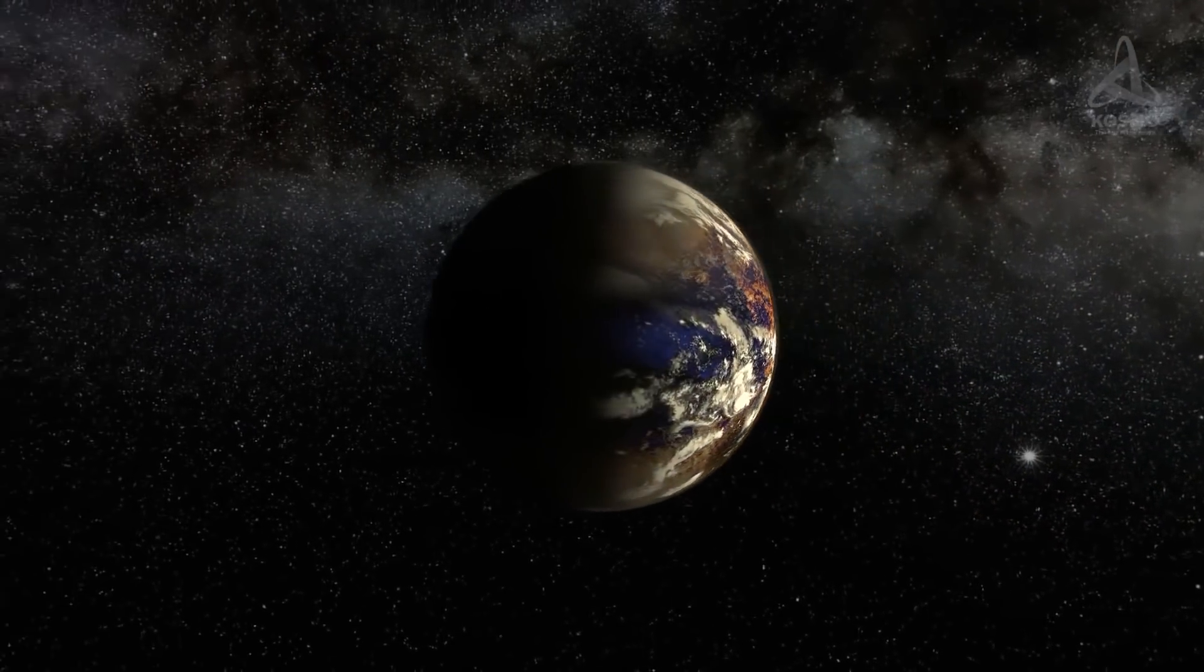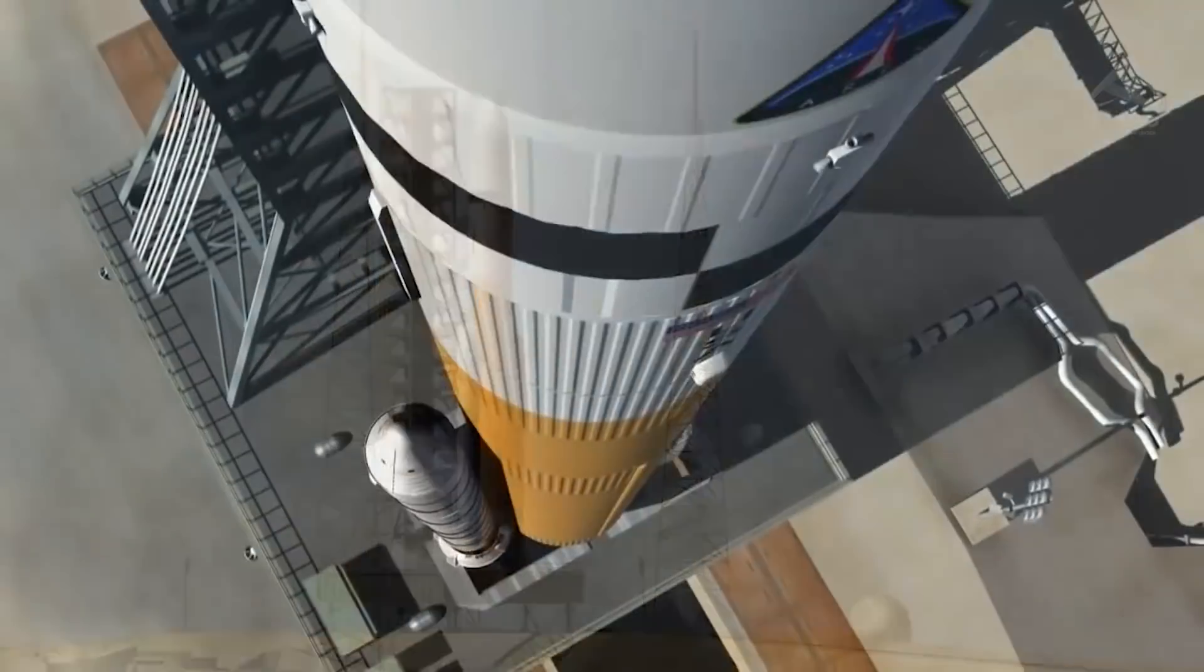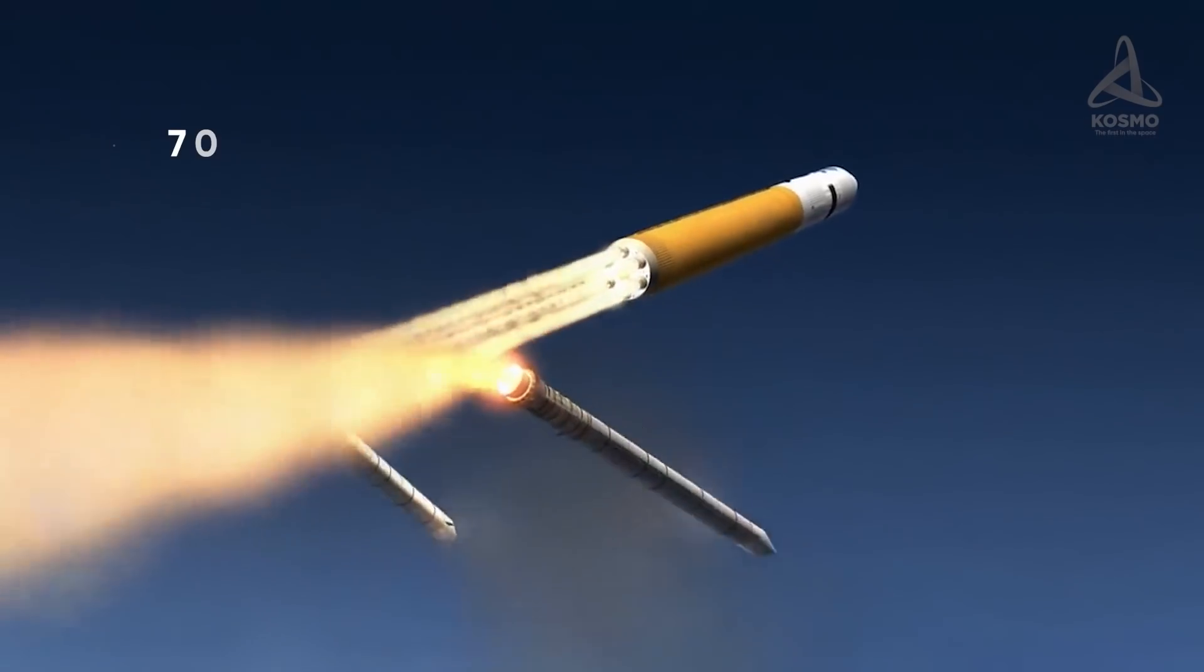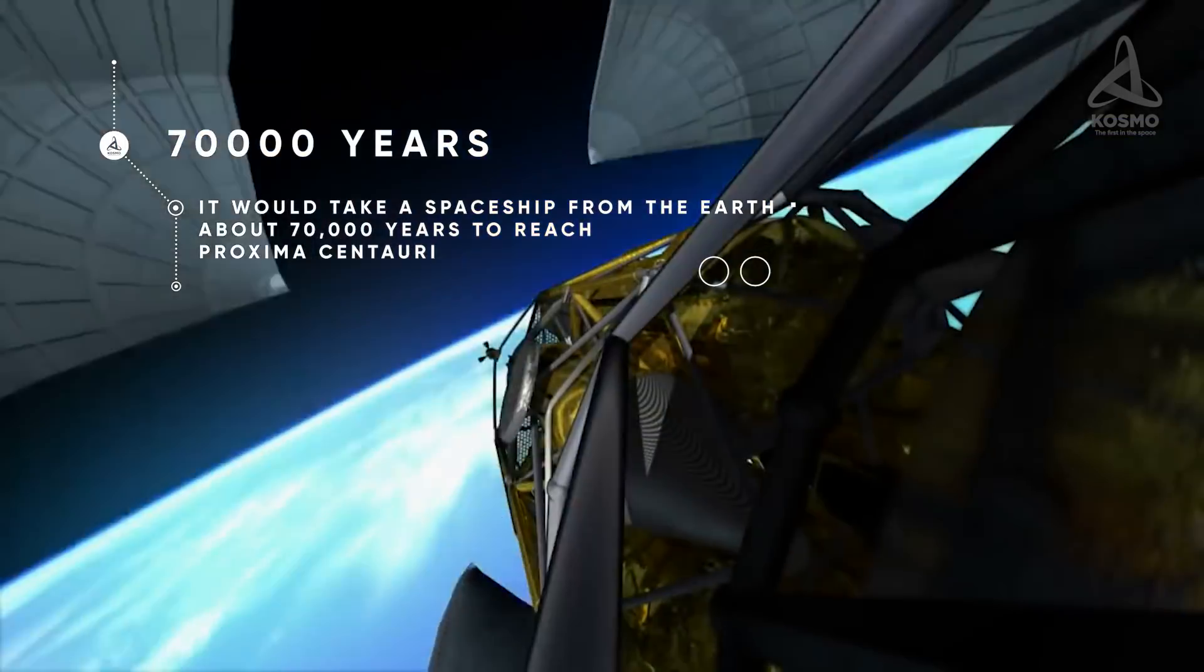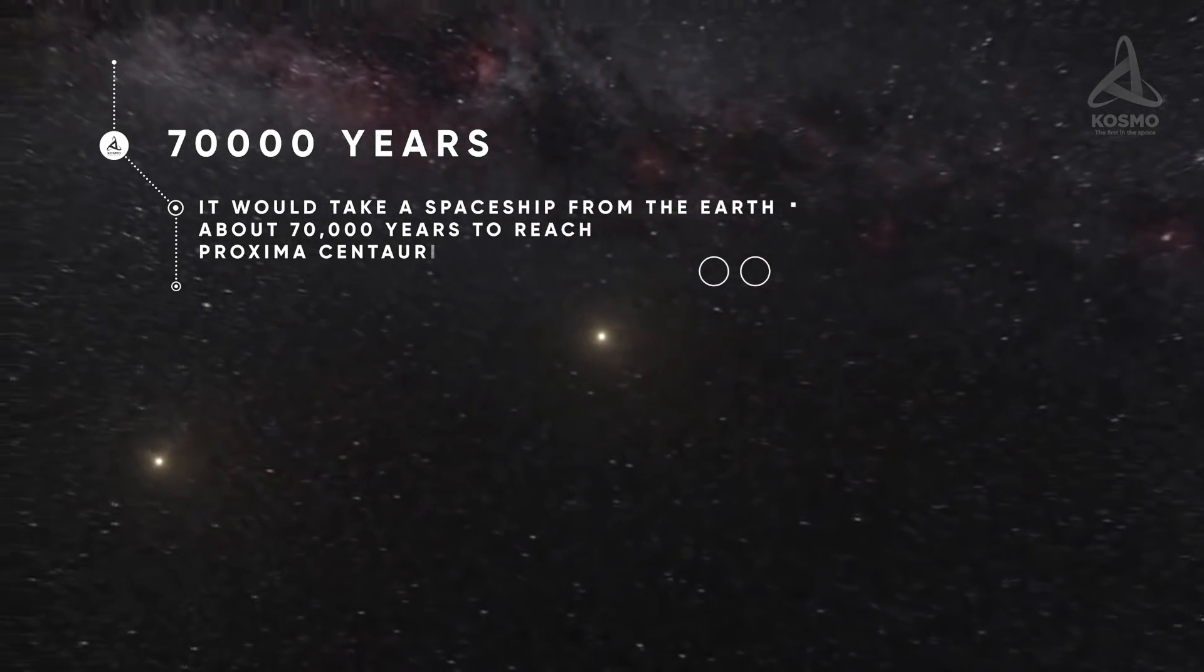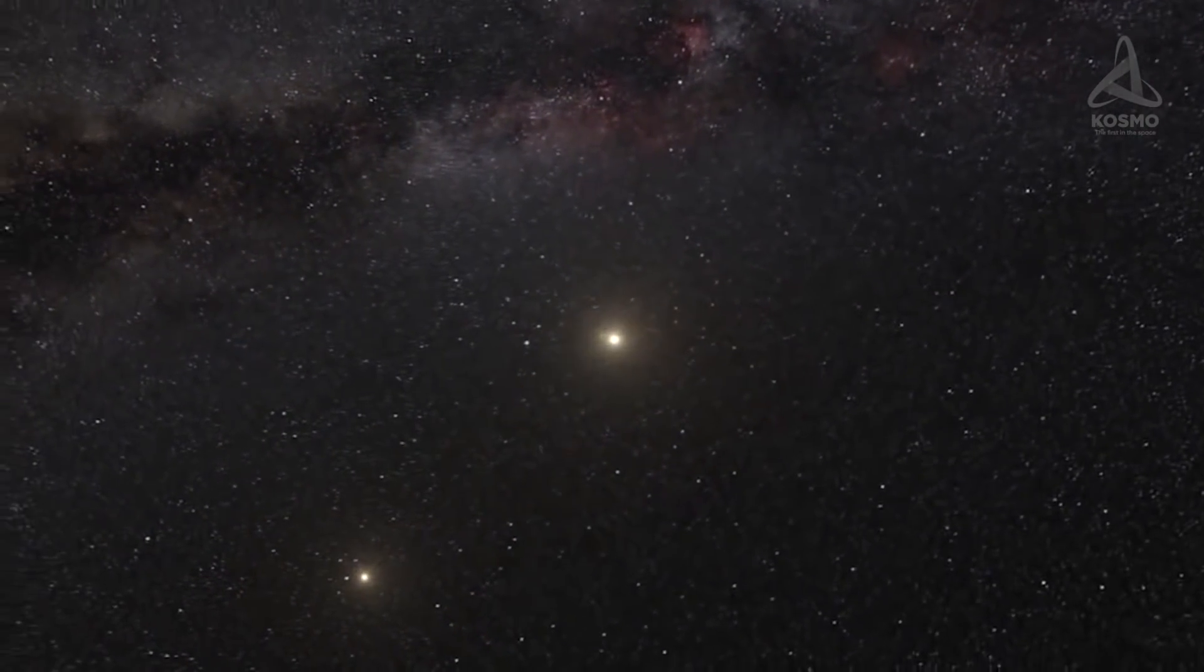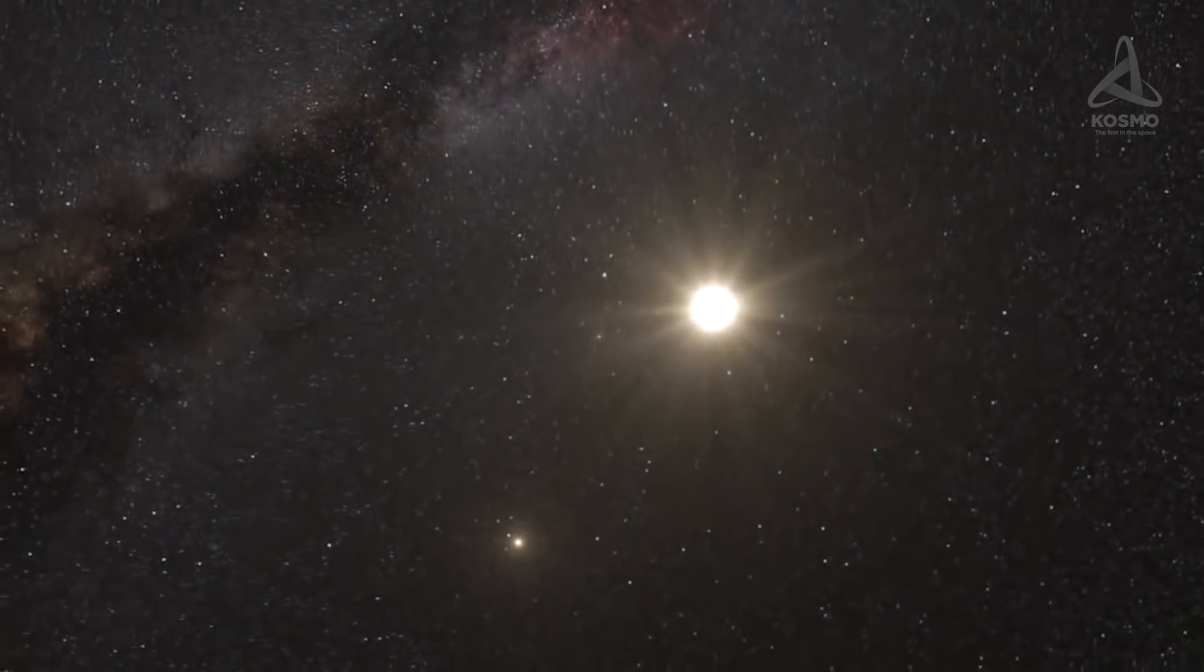By the same token, it's worth mentioning that according to scientific estimates, it would take a spaceship from the Earth about 70,000 years to reach Proxima Centauri. However, with the data received with modern telescopes, it is still not clear whether Proxima B may be habitable.